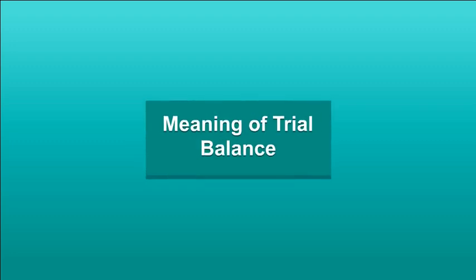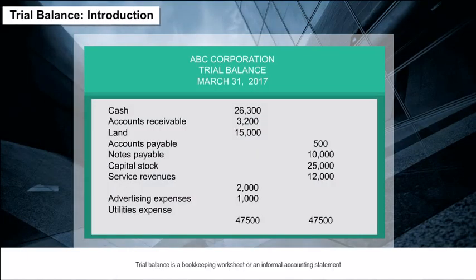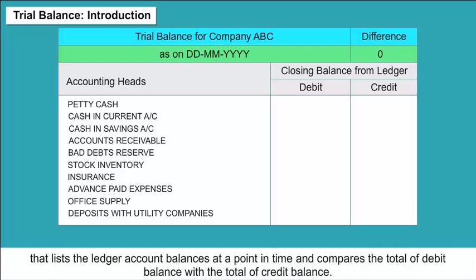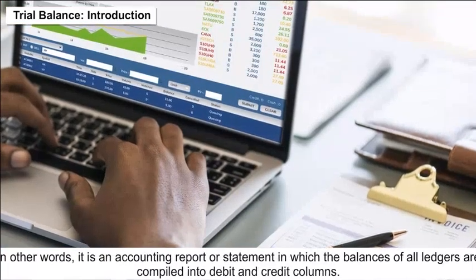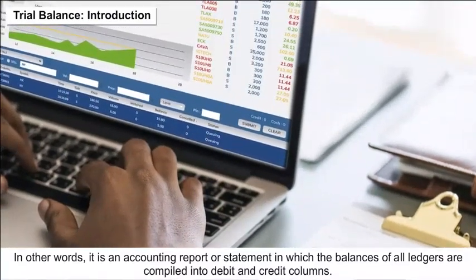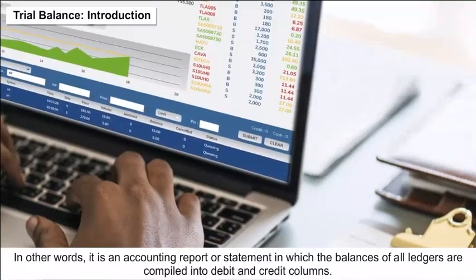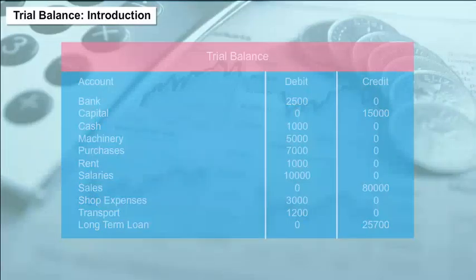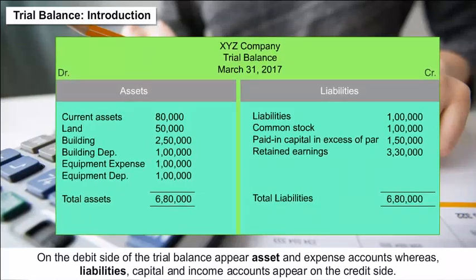Meaning of Trial Balance: A trial balance is a bookkeeping worksheet or an informal accounting statement that lists the ledger account balances at a point in time and compares the total of debit balance with the total of credit balance. In other words, it is an accounting report in which the balances of all ledgers are compiled into debit and credit columns. Ledger balances are segregated as debit and credit balances.